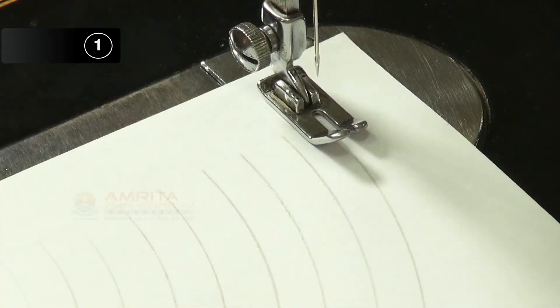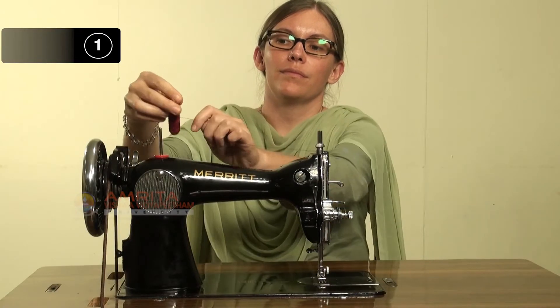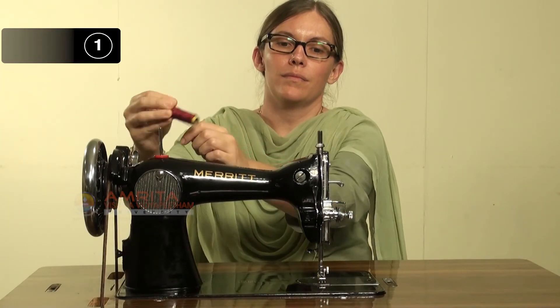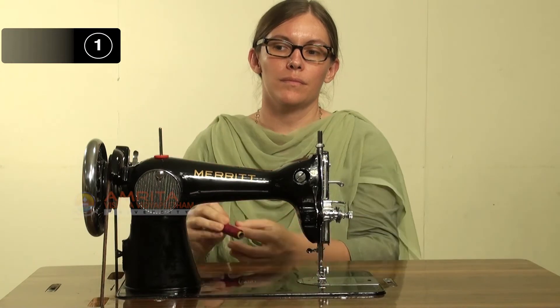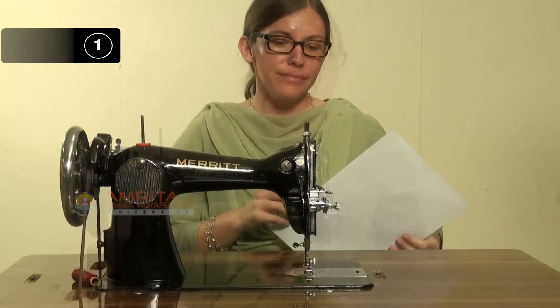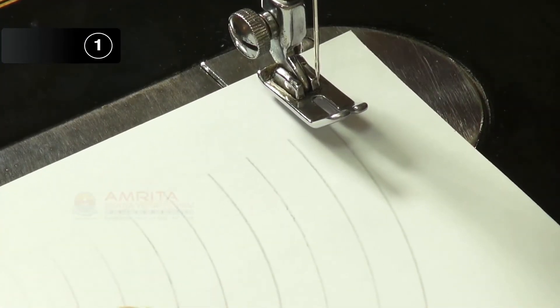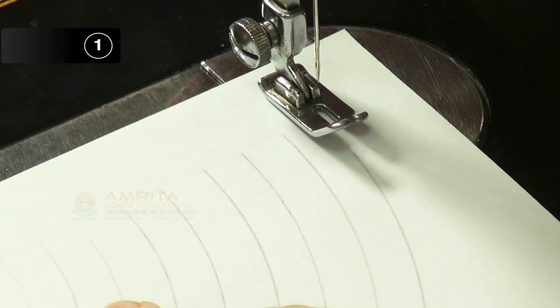Step 1: Place the sheet of paper with curved lines under the presser foot. Do not thread the needle while stitching on paper. Keep excess paper on the left side.